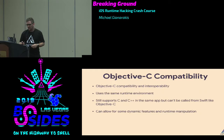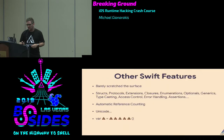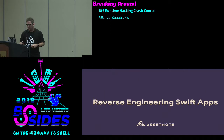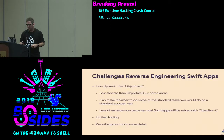Objective-C compatibility: Swift uses the same runtime environment. It still supports C and C++ in the same app, but you can't call C or C++ code from Swift directly like you can with Objective-C — you have to go through a bridge. It can allow for some dynamic features and runtime manipulation with '@objc' interop, which is most applications these days still. Reverse engineering Swift applications presents some challenges: it's less dynamic and less flexible than Objective-C, making it harder to get information like the class dump. Most of the tooling isn't being updated for Swift.